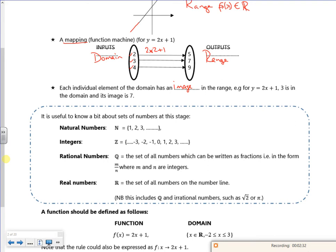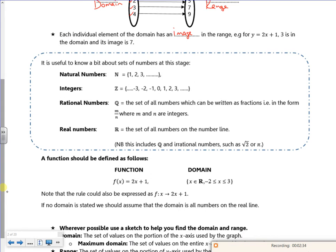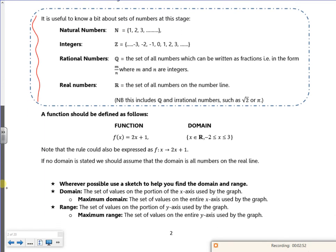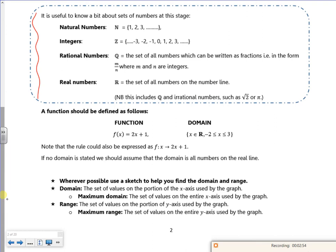We've talked about in the past about natural numbers which are counting numbers, integers which are whole numbers with plus or minus, rational numbers which are fractions, and real numbers. You've seen these before.